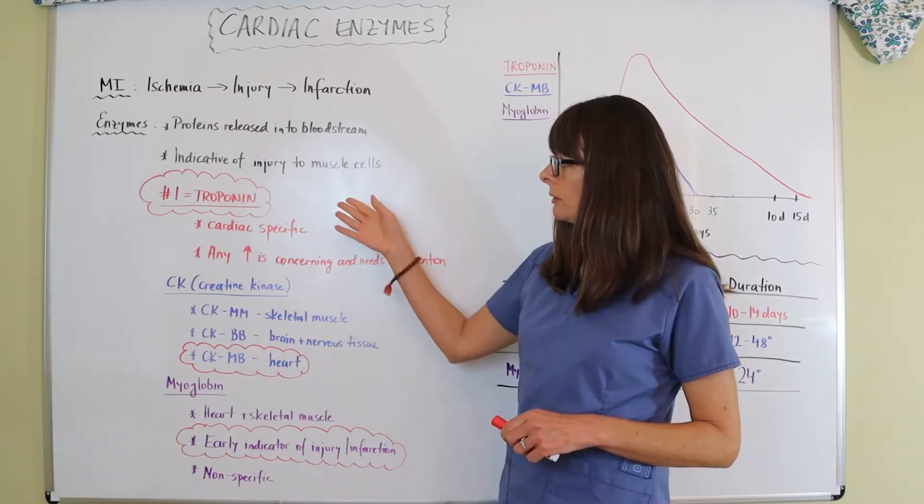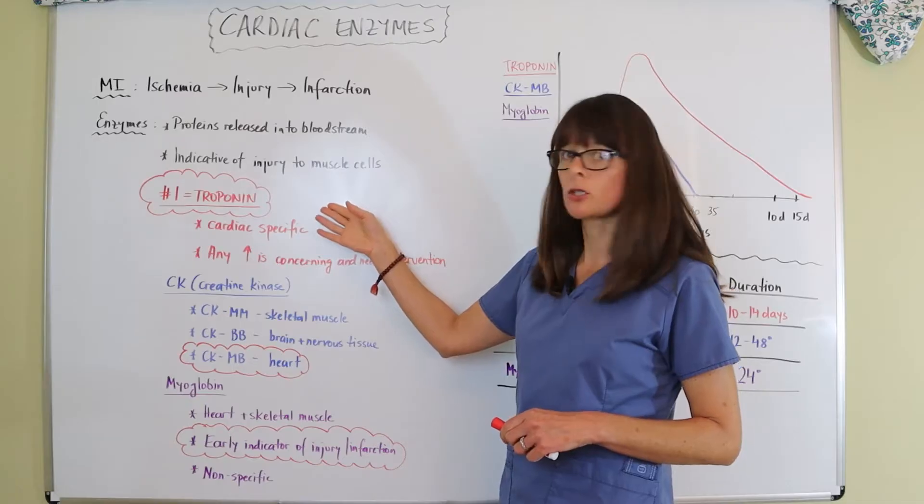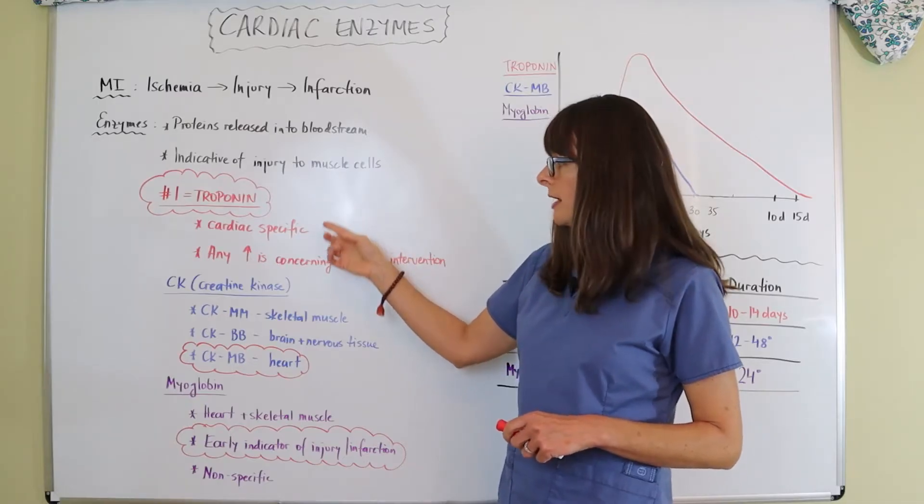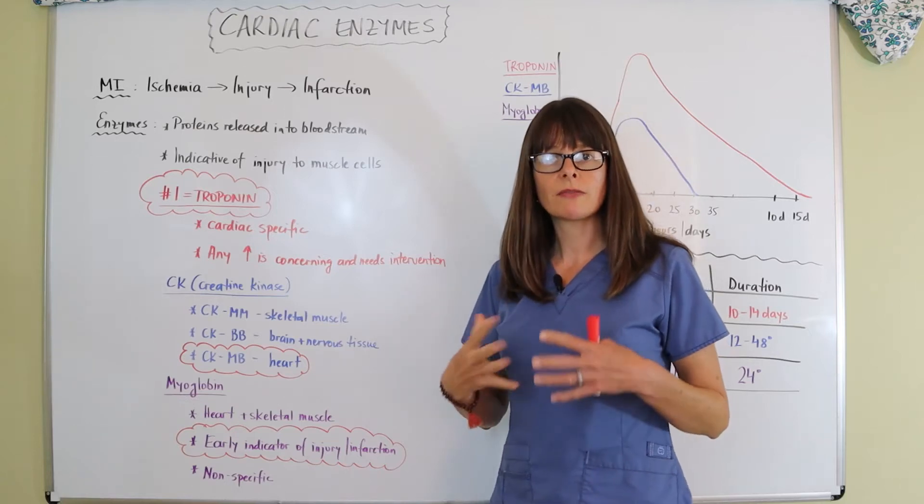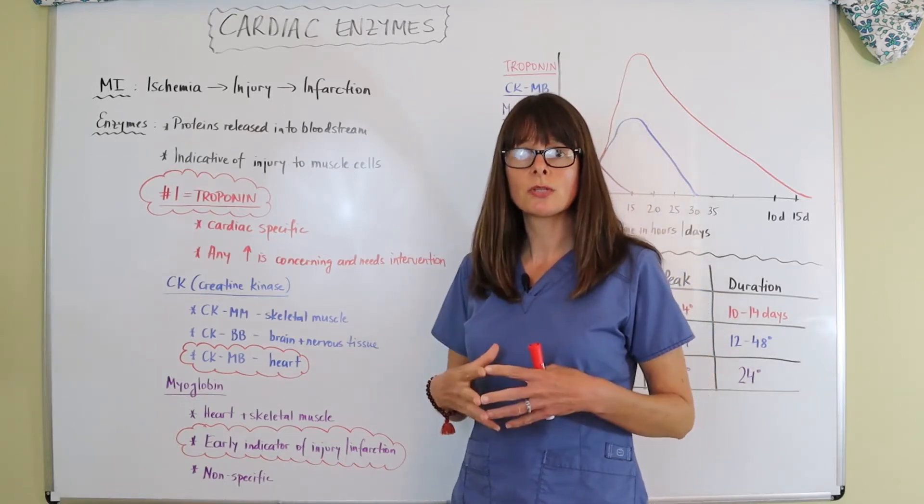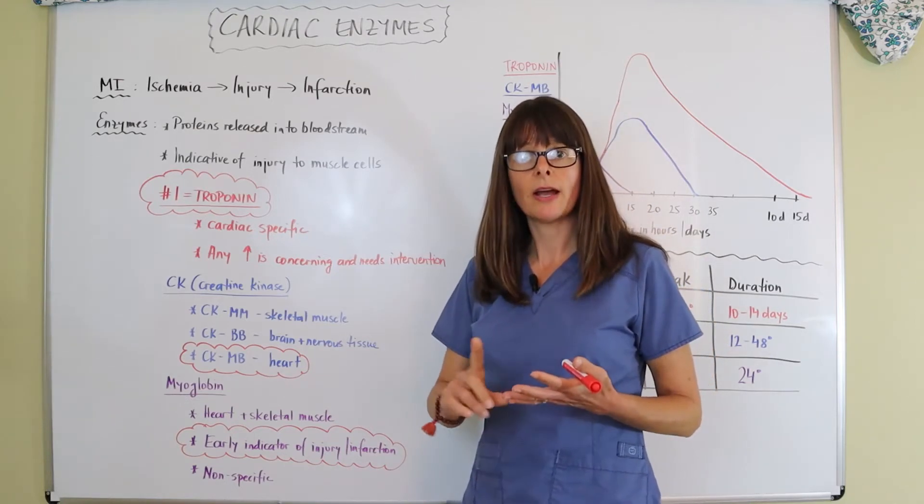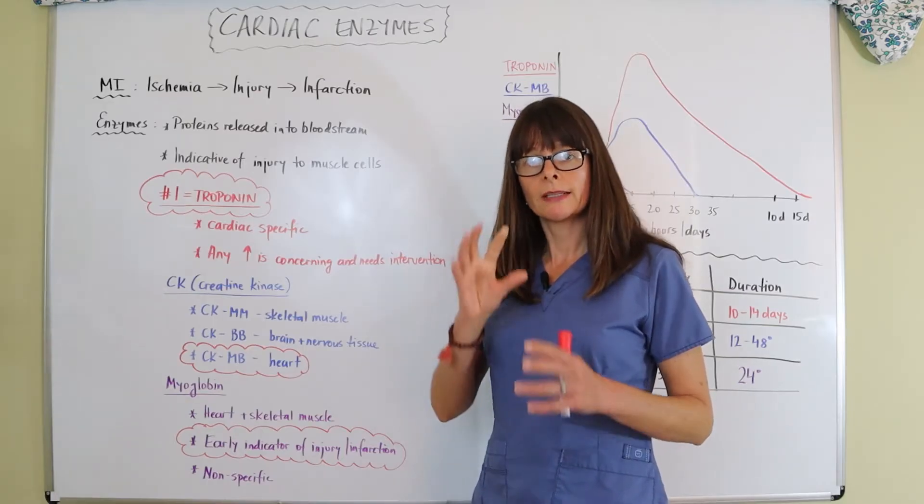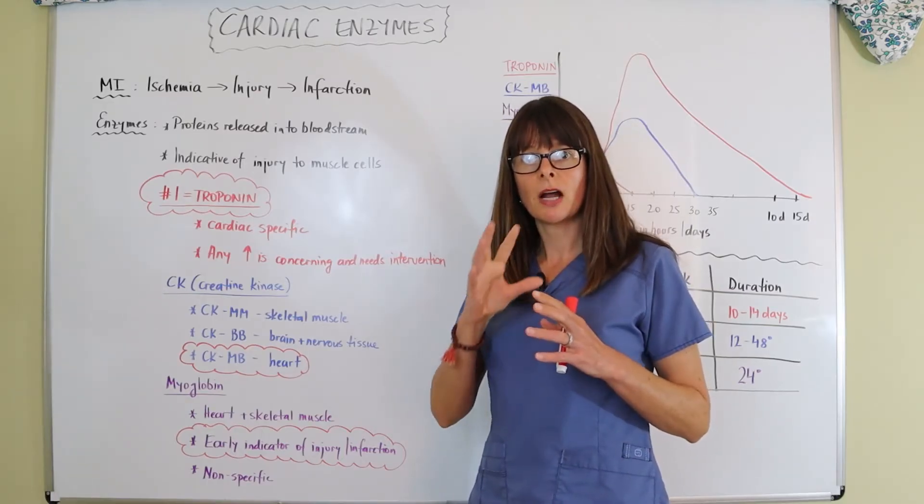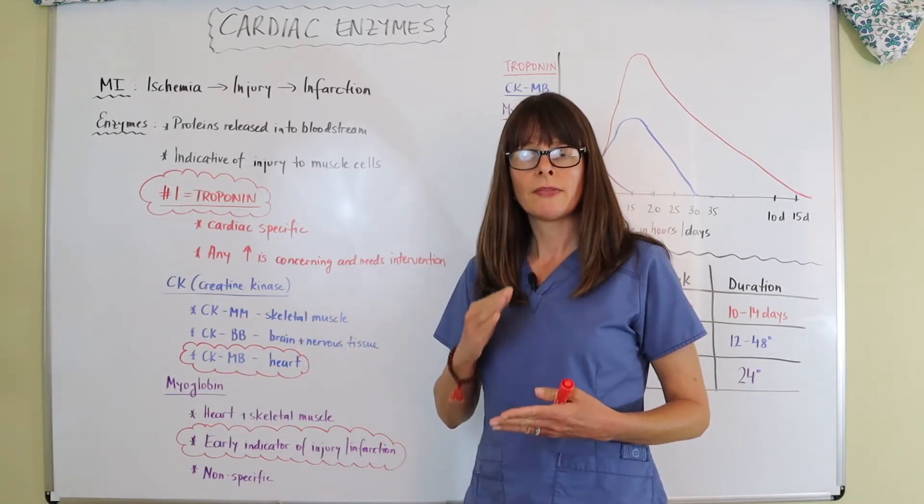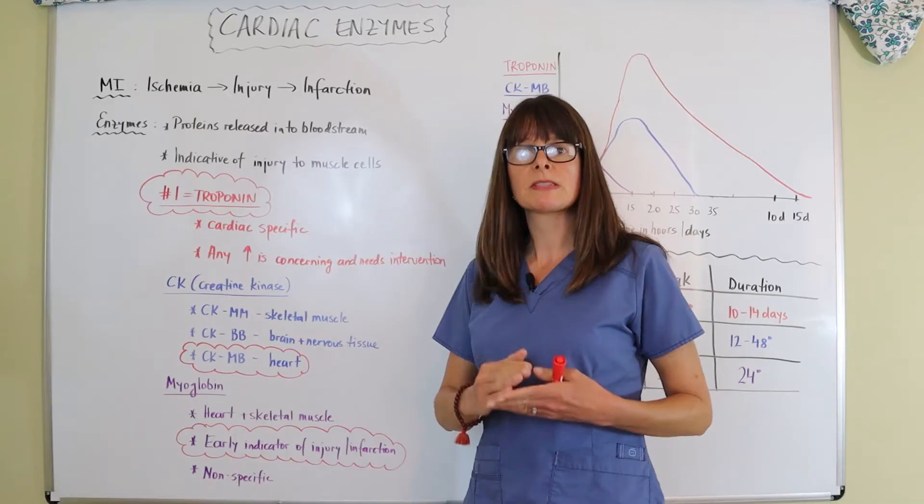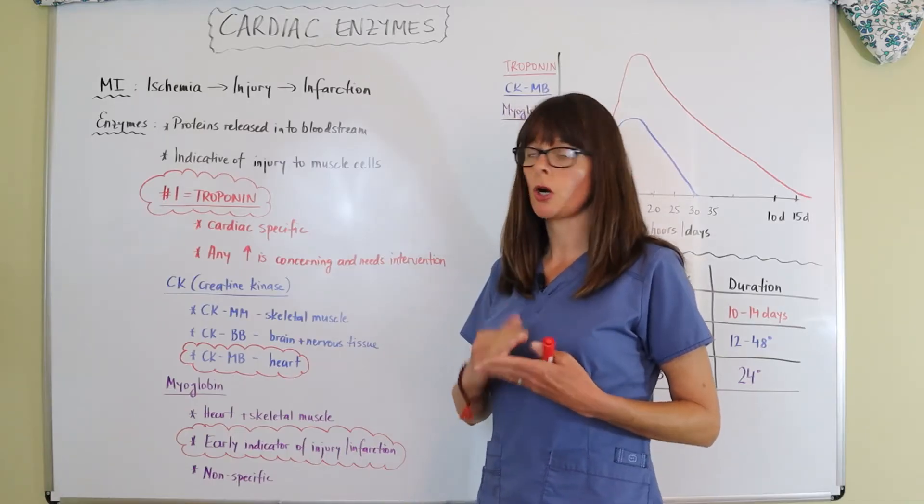Now, the most common or the most important cardiac marker is troponin. And the reason why is because it's cardiac specific. Recall that we have several different muscle tissues in our body, skeletal and cardiac muscle being two of them. And these different cardiac markers are sometimes not as specific, but troponin is the one that is only specific to the heart, heart muscle, so cardiac muscle.